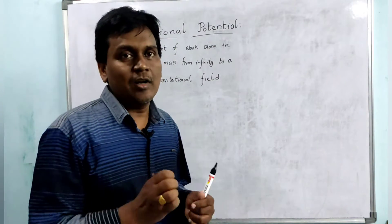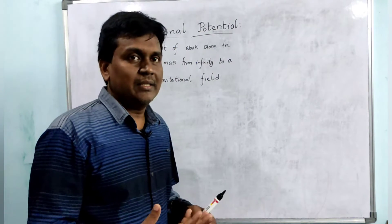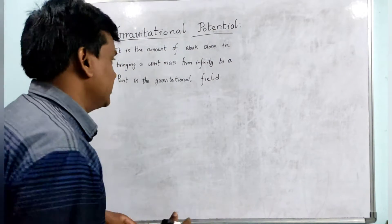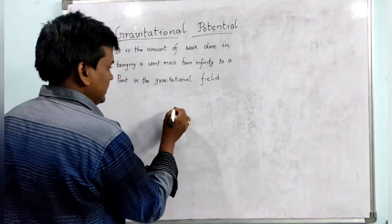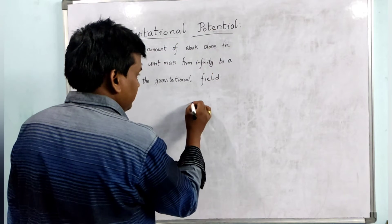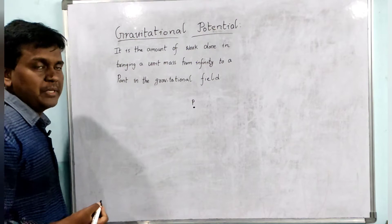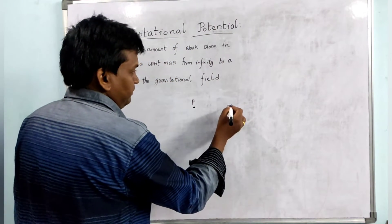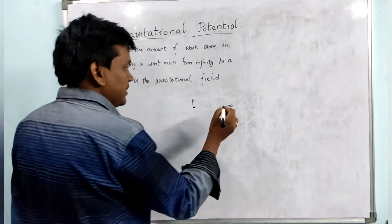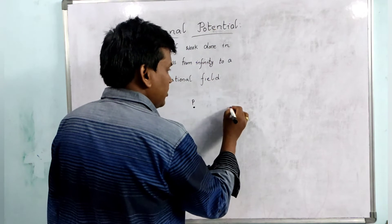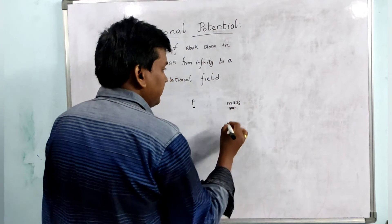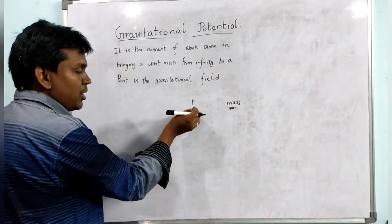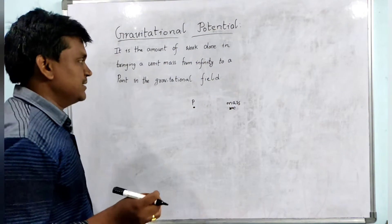That means the work is done on the unit mass — to bring that unit mass from infinity to a point in the gravitational field. Consider a point P in the gravitational field, and also a point at infinity. We consider a small mass at infinity and bring it to point P. This is called gravitational potential.